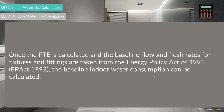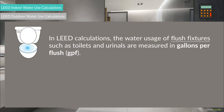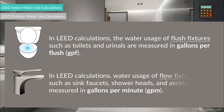Next, project teams will need to discover innovative strategies for reducing water consumption as much as possible. One important thing to note is that when doing water use calculations for LEED, the water usage of flush fixtures such as toilets and urinals is measured in gallons per flush, or GPF, and the water usage of flow fixtures such as sink faucets, showerheads, and aerators is measured in gallons per minute, or GPM.